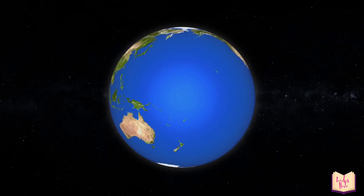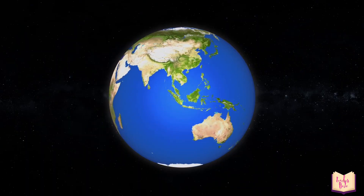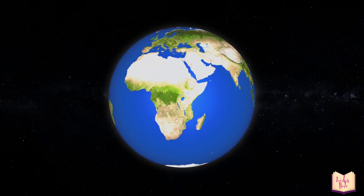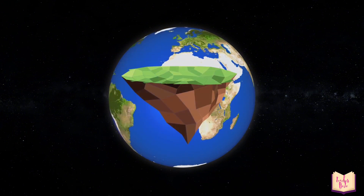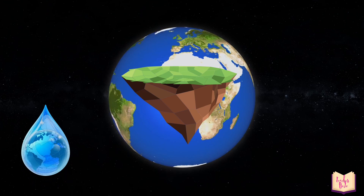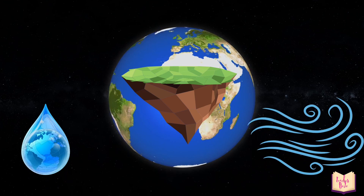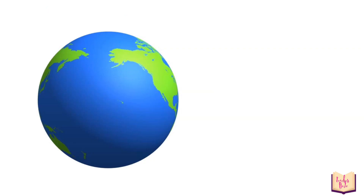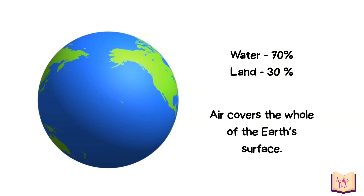Earth is the planet where we live. Its environment is made up of three parts: the land, the water, and the air. Approximately 70% of the Earth's surface is water and 30% is land. Also, air covers the whole of the Earth's surface. Land, water, and air make the Earth habitable for humans, plants, and animals.